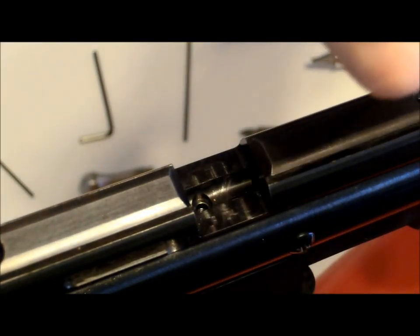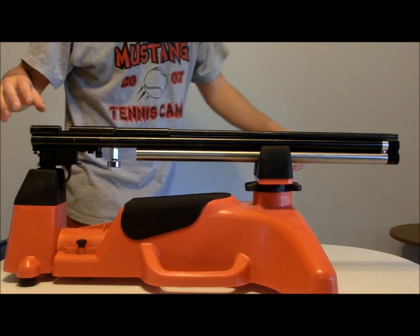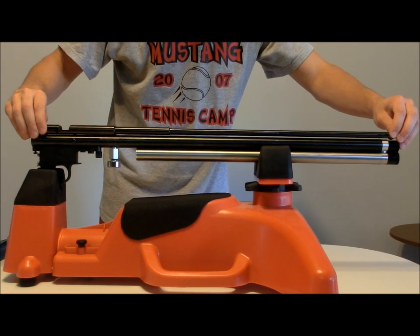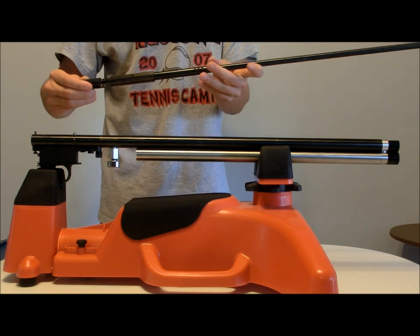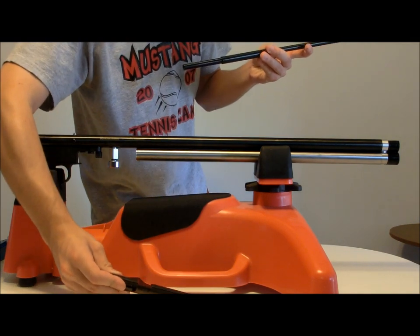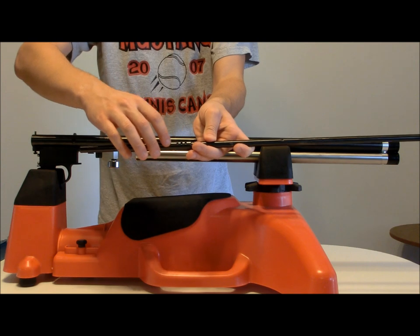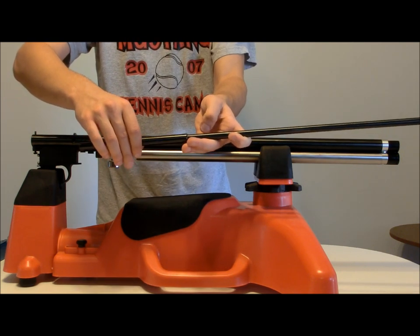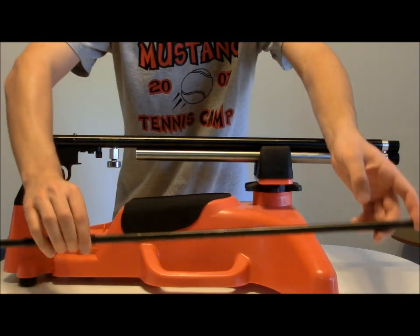We just unscrew that. Be very careful with this one. There we go, got it out right there. Set that aside as well. Now that we have everything taken off, we're just going to pull up on the entire assembly and you have your breech right here, and you have your barrel and this little covering for the barrel that comes on the Discovery. We'll leave that on there for now. We're just going to set that aside.